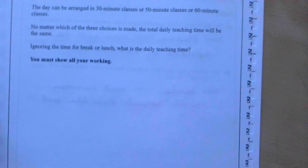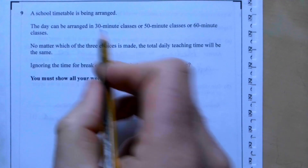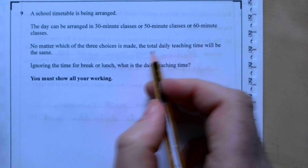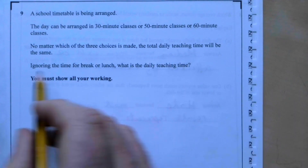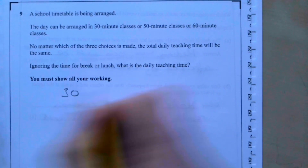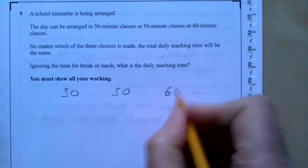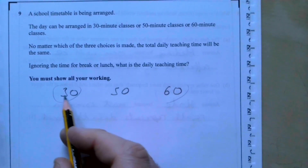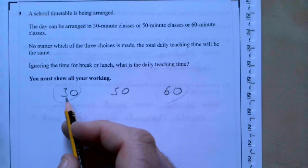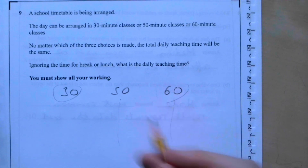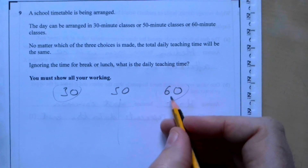Question nine: A school timetable can use 30, 50, or 60-minute classes and the total daily teaching time is the same for all. Since 30 divides into 60, we really only need to compare 60 and 50. Going up in multiples of 60: 60, 120, 180, 240 — 50 doesn't divide into any of these.